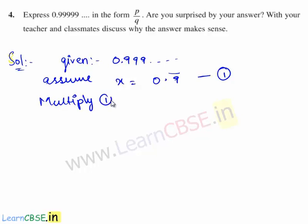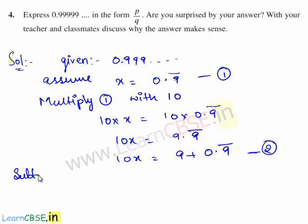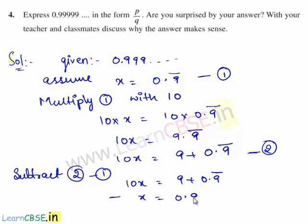Since in the given decimal expansion one digit is repeating, we shall multiply equation 1 by 10. So we have 10 times x is equal to 10 times 0.9 bar. This gives 10x is equal to 9.9 bar. This can be written as 10x is equal to 9 plus 0.9 bar. Consider this as equation 2.